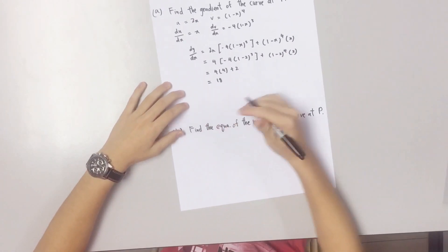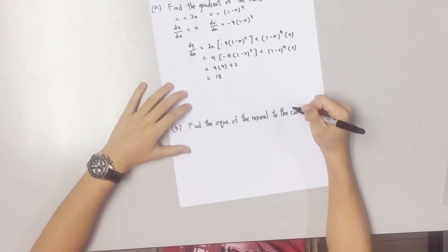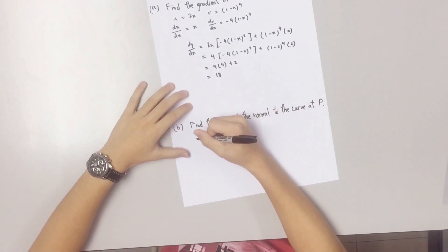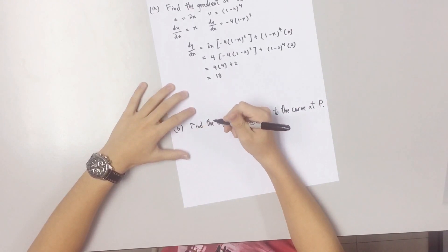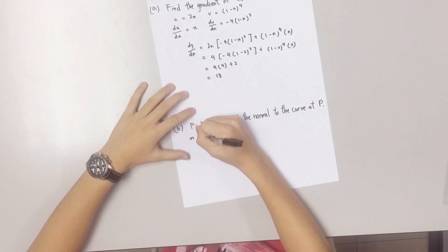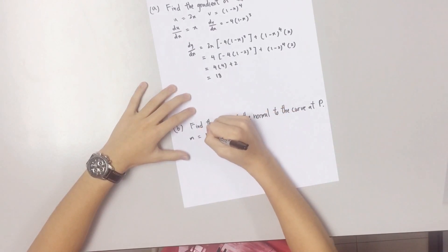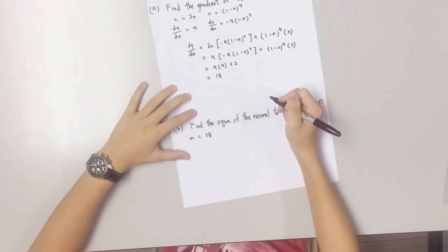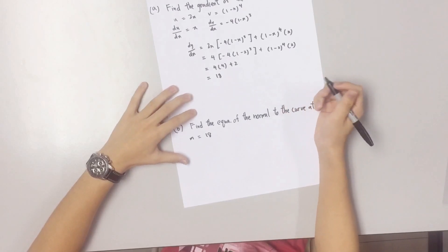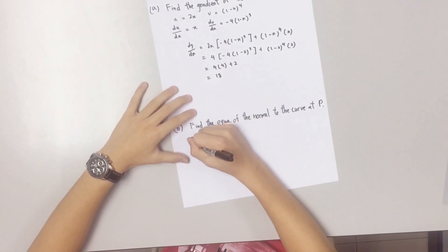B, find the equation of normal to the curve at P. First, you find the gradient. When the gradient of the curve at P is 18, the gradient of the normal to the curve at P is negative 1 over 18.